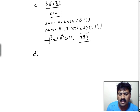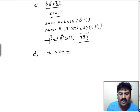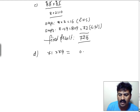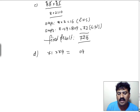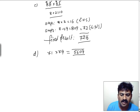One more example: 71 into 79. Here we can apply this technique. 1 into 9 is 09. And for 7, the next digit in the number system is 8. 7 into 8 equals 56. So 5609 is the answer.